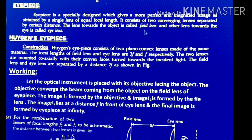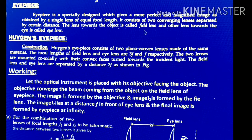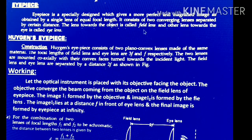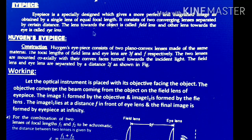These eyepieces consist of two converging lenses. The light beams start, then after passing through the lenses they meet at a point. It consists of two converging lenses separated by some very small distance. The two lenses are: first one is the field lens or objective, and the next one is the eye lens.